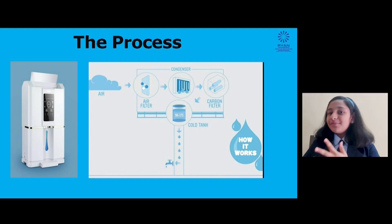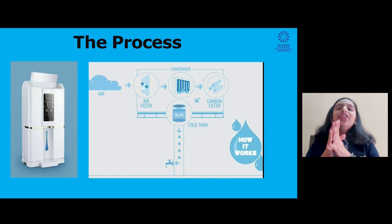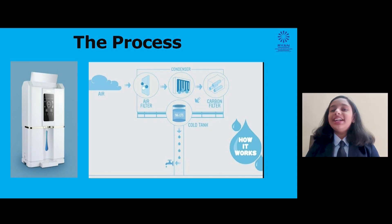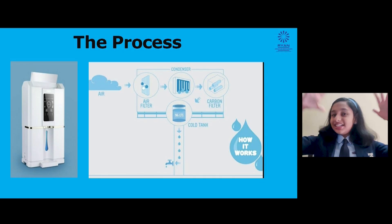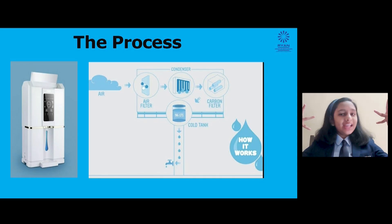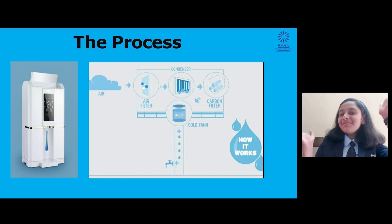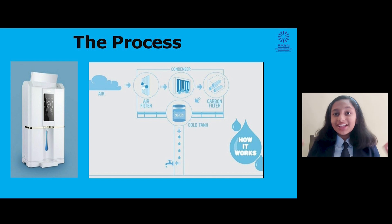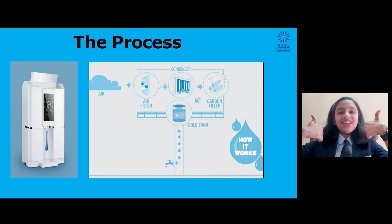First, humid ambient air is drawn into the machine. It is then filtered to remove any unwanted particulates or bacteria. The air is then taken into the condensation chamber where it is condensed into water. The water is treated with ozone and ultraviolet light, maintaining its purity. Then, ta-da! You get high quality, chemical-free drinking water, chilled and ready to drink.